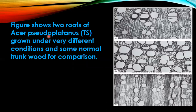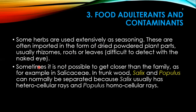The figure shows two types of roots of Acer pseudoplatanus grown under very different conditions, and some normal trunk wood for comparison. Food adulterants and contaminants: some herbs are used extensively as seasoning and are often imported in the form of dried whole plant parts, usually rhizomes, roots, or leaves. In trunk wood, Salix and Populus can normally be separated because Salix usually has heterocellular rays and Populus homocellular rays.